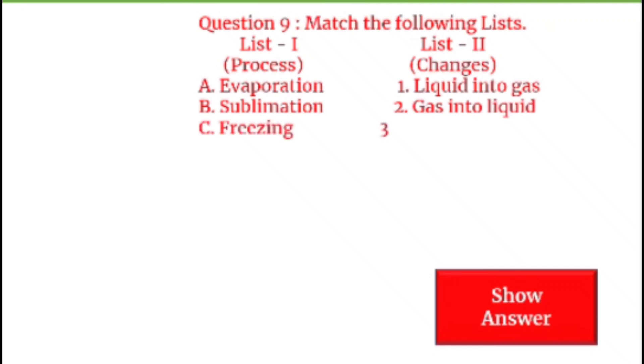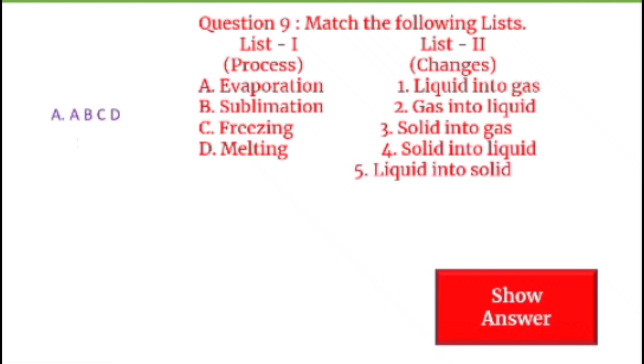Next question on your screen, question number 9. Match the following lists, List 1 and List 2. In List 1: process, and List 2: changes. A: Evaporation - 1: Liquid into gas. B: Sublimation - 2: Gas into liquid. C: Freezing - 3: Solid into gas. D: Melting - 4: Solid into liquid. E: Liquefaction - 5: Liquid into solid. What would be the option? You can see. A: 1, 3, 2, 4, 5. B: 1, 3, 5, 4, 2. C: 4, 3, 2, 1, 5. D: 5, 3, 1, 4, 2. So you can choose the correct option. What would be the answer of this question? Let's see. D is the correct answer, where A: 1, B: 3, C: 5, and D: 4. This is correct.